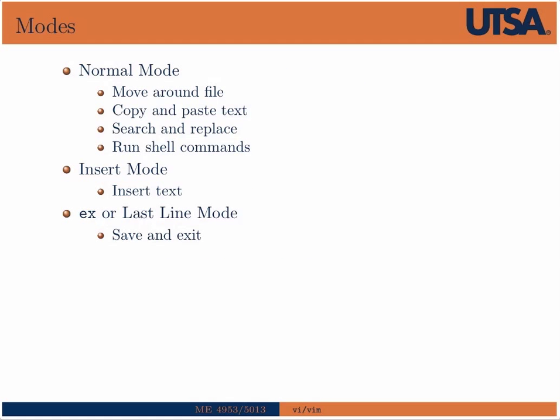This is probably quite different than what you're used to in editing a file. Vim actually has three modes. It has the normal mode — also sometimes called edit or editor mode. This is the mode that Vim starts in, and this is the mode where you move around the file, copy and paste text, search and replace, and run shell commands from the last line mode.